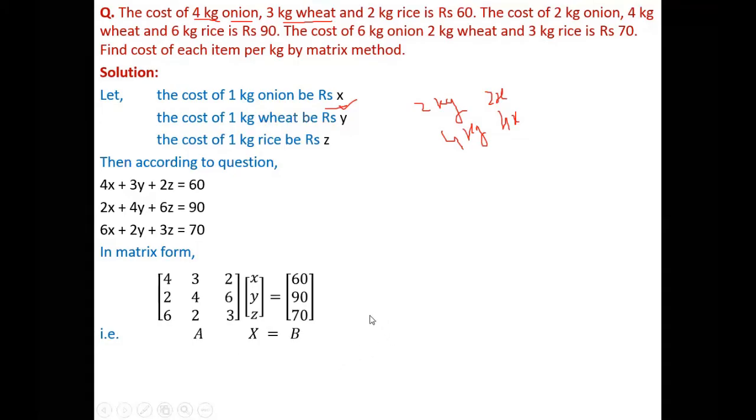We know from the earlier video that X equals A inverse B. And ultimately A inverse can be written as 1 by determinant A times adjoint A. So ultimately we will have 1 by determinant A in bracket adjoint A times B.